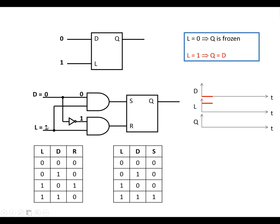Let's look at the first state where L is high and D is low. Going into this AND gate, we've got L and NOT D. So L is high, D is low, meaning the output here will be a 1. Looking at the other AND gate, we've got a 1 and a 0 going in, so the output will be low. This means for the active high bistable, if R is high and S is low, Q is going to be reset low — which is exactly what we've got. So when latch is high, D and Q are going to be the same.